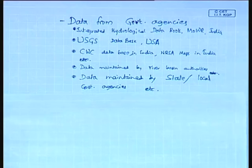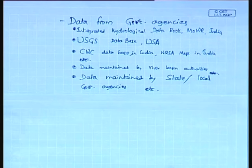Added to this is the data maintained by state and local government agencies, in developing countries such as India, developed countries such as the USA and Europe, Japan, and other countries. These agencies have maintained a very good data network in the form of statistical data, graphs, maps, and charts. They have a very good monitoring network and their data is also a major source.